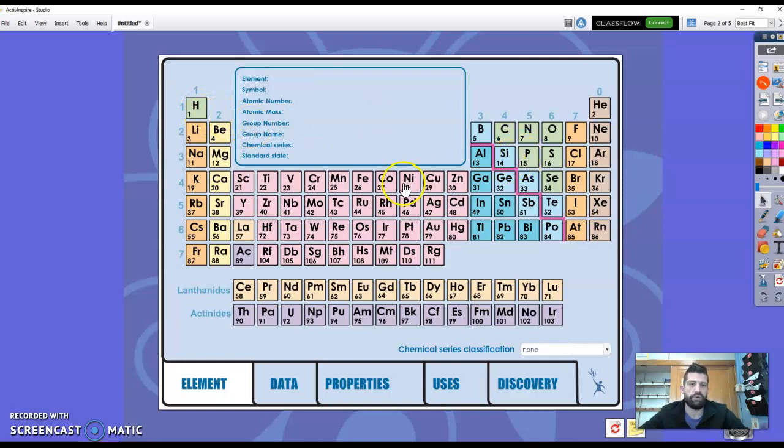So the periodic table, we won't go into it in depth, but it does give us an idea of how many shells there are and how many electrons are in that last shell so that it would form.